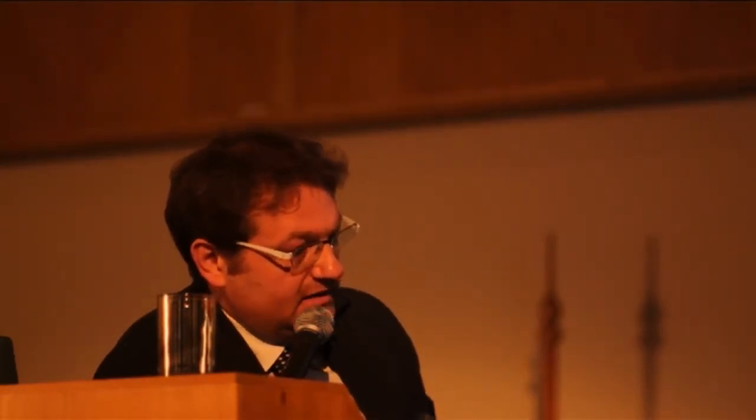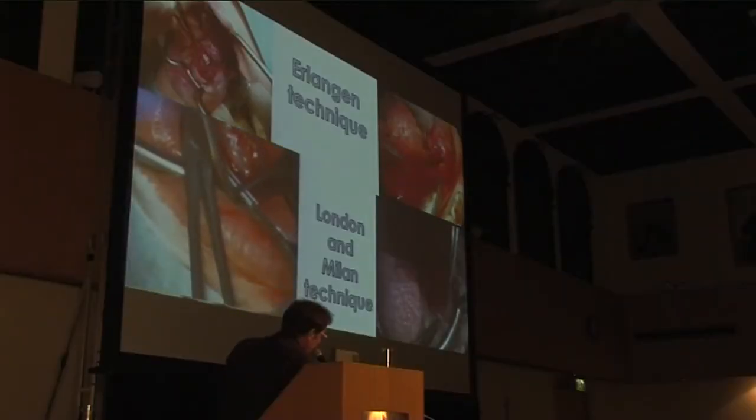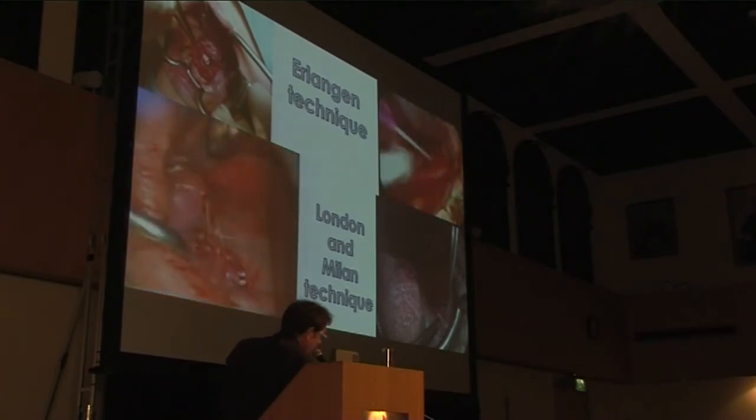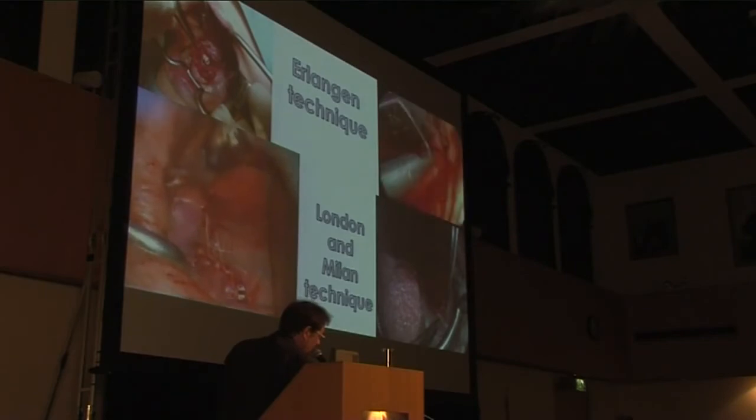Here is the removal of the stone. I prefer to put a net of Tabotamp or Surgicel in order to have hemostatic and antibacterial activity to cover the area of the incision. Sometimes I put a Vayflon tube in order to guarantee the patency of the ductal lumen. In the upper part you can see the hilar marsupialization after the removal of the stone.